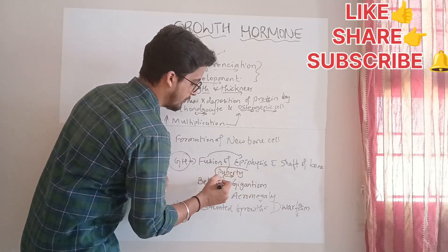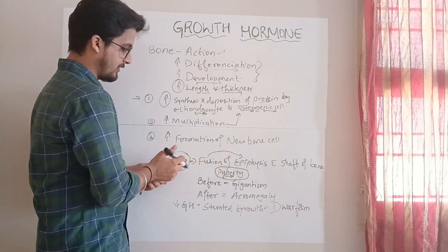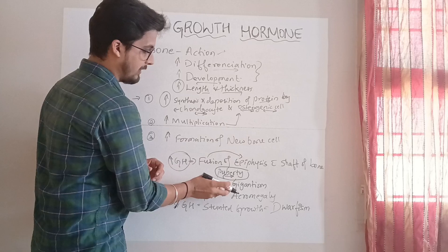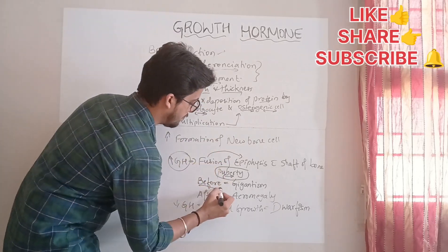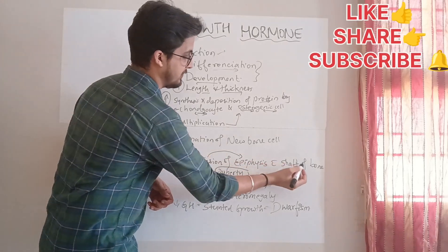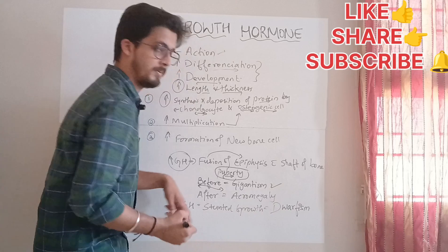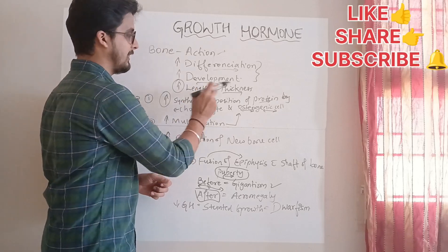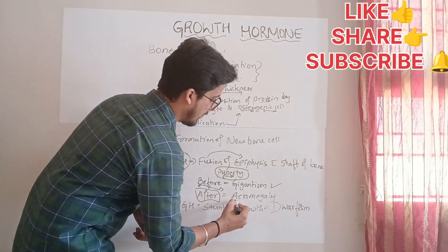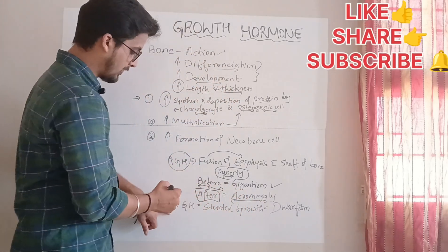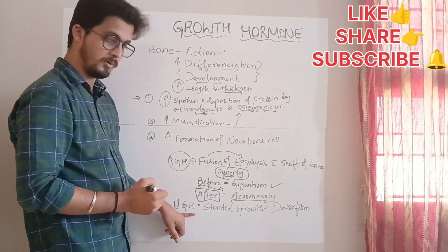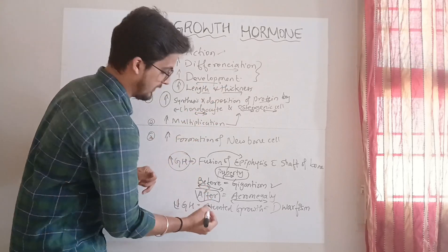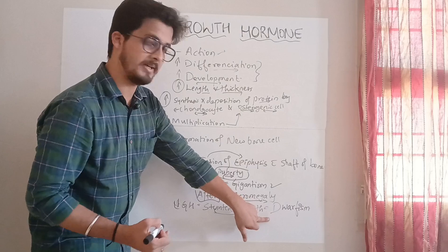After puberty, the epiphyses fuse with the shaft of the bone, after which only bone thickness increases and bone length does not. Hypersecretion of growth hormone before the fusion of epiphyses with the shaft of the bone causes gigantism. After fusion, hypersecretion causes acromegaly, where only thickness increases. Hyposecretion of growth hormone results in stunted growth or dwarfism.